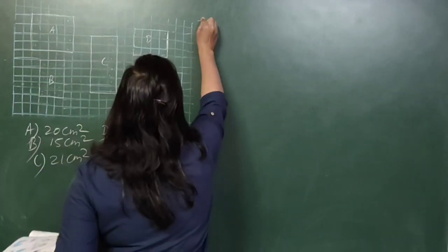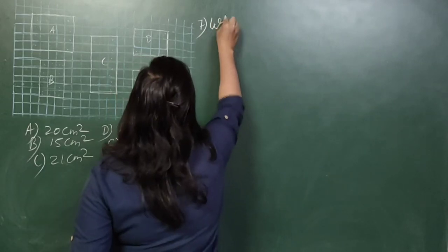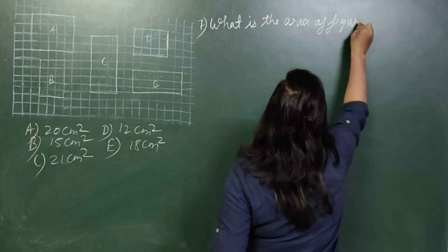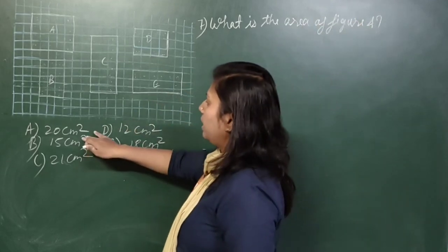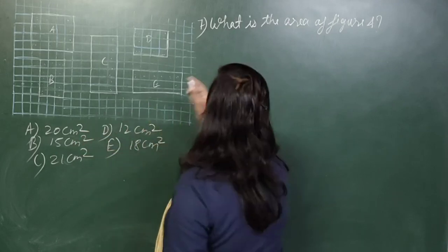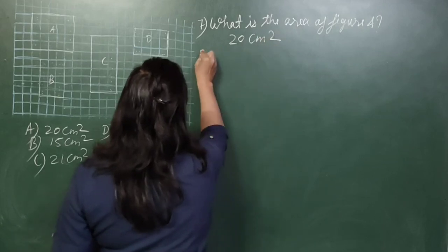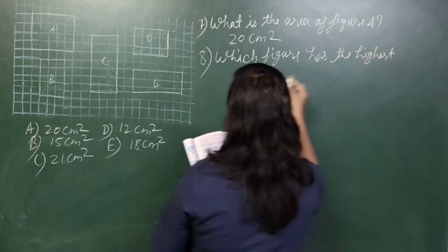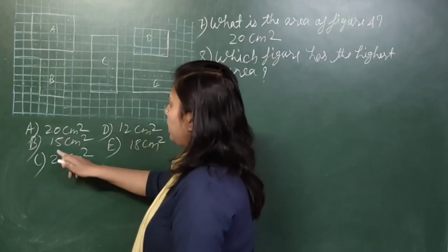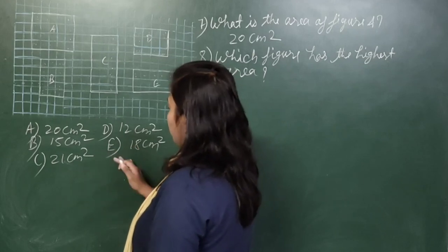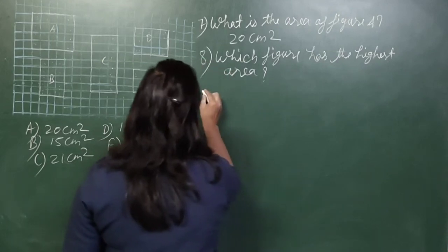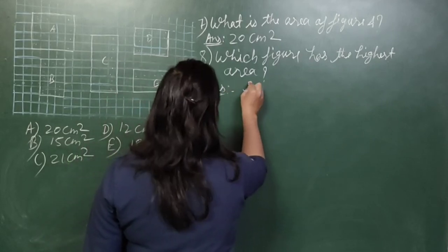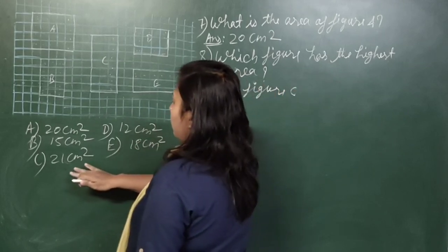Question number 7: What is the area of figure A? We already found the area of all figures. The area of figure A is 20 centimetres square. Question number 8: Which figure has the highest area? Comparing: 20, 15, 21, 12, 18. The number 21 is greatest, so figure C has the highest area.